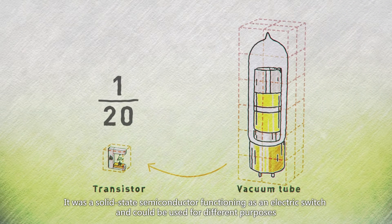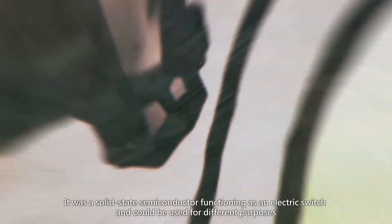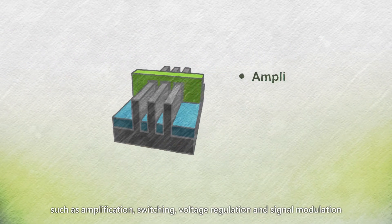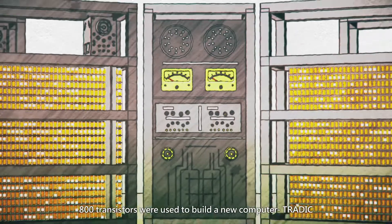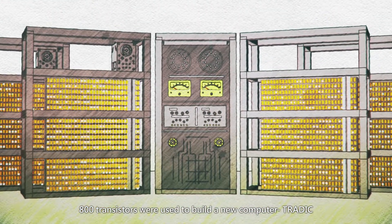It was a solid-state semiconductor functioning as an electric switch and could be used for different purposes, such as amplification, switching, voltage regulation, and signal modulation. 800 transistors were used to build a new computer, TRATIC.